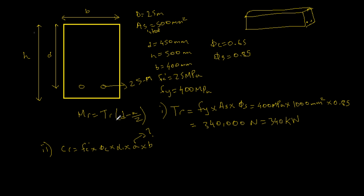How do we find a? Well, fc is 25 MPa, and phi c is a constant, alpha 1 is a constant, and b is 400 millimeters. And we want to find a. Well, we know that Cr, so if we have our neutral axis here, this is our neutral axis.